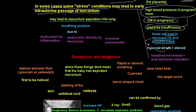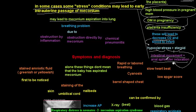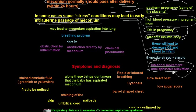The hypoxia causes stress, which leads to steroid secretion by the adrenal gland of the baby. This results in two things: intestinal movement and anal sphincter relaxation. The meconium sitting in the colon is then expelled early due to increased intestinal movement and anal sphincter relaxation, leading to early intrauterine passage of meconium.